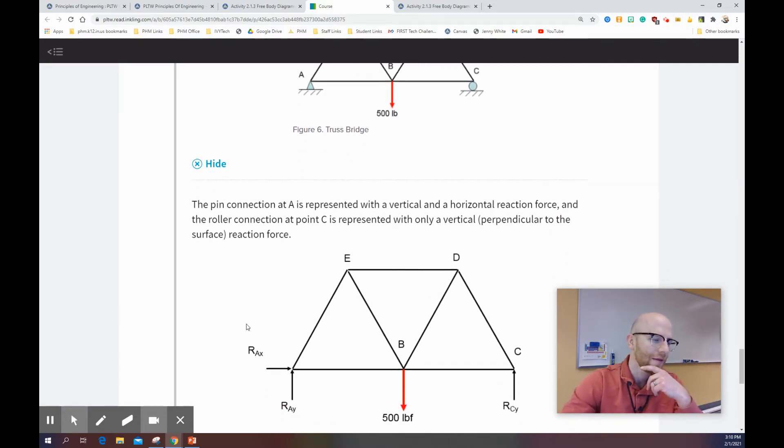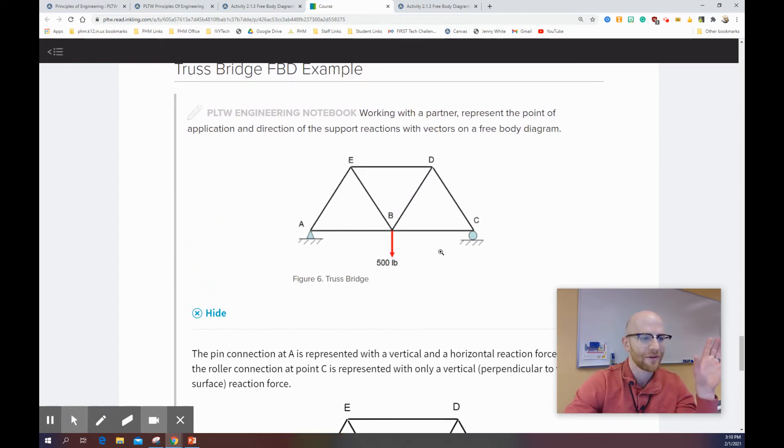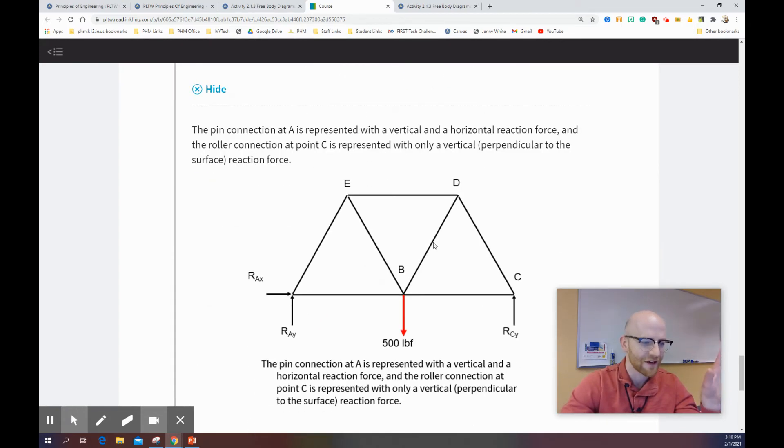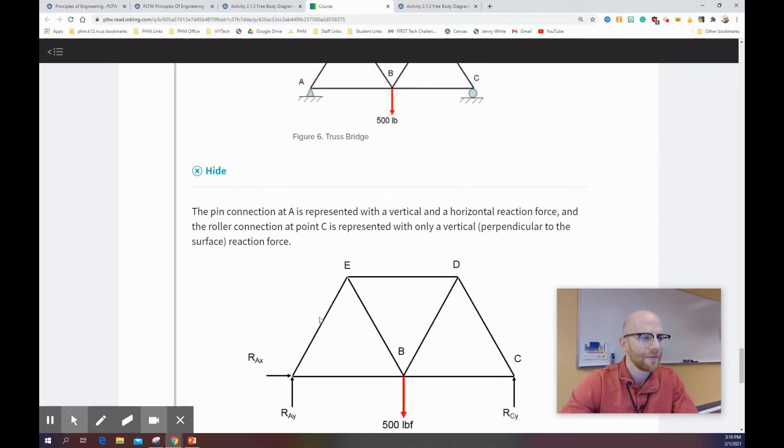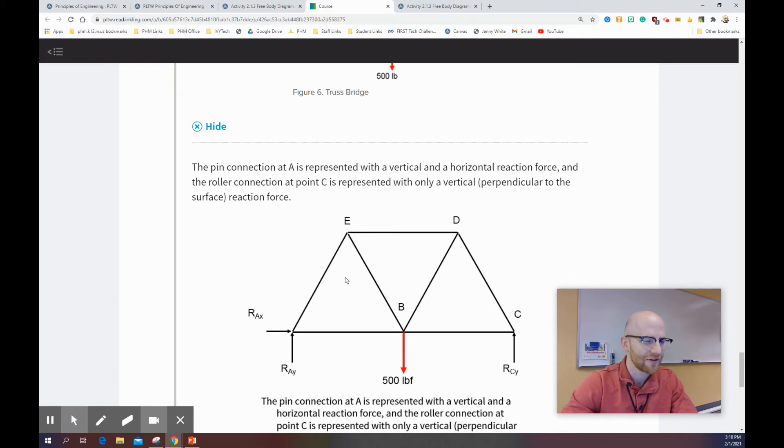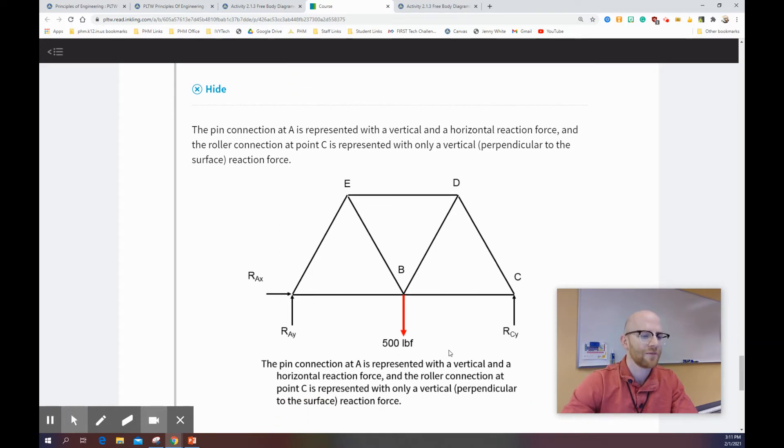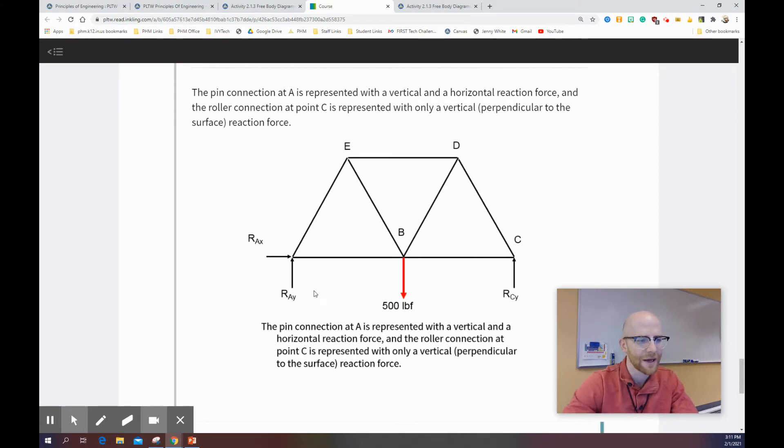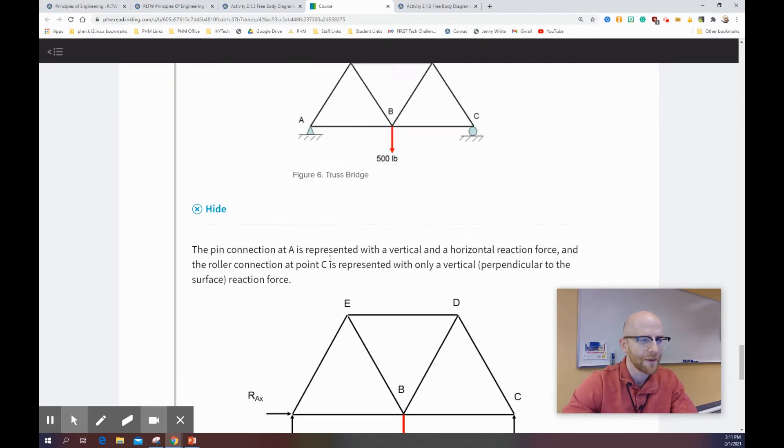Oh, here we go. Sorry, I was thinking of this as the free body diagram. This is just a visual representation. Here's the free body diagram. That's what it's saying in this moment here. It's saying, hey, there's a force reactionary at A on the x-axis, just like the force reaction at A on the y-axis. There's a reaction at C on the y-axis. And there's a load of 500 pounds force.